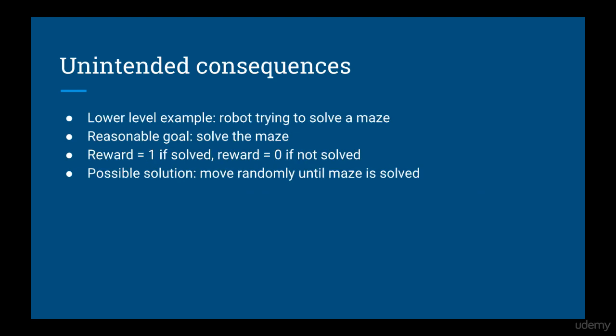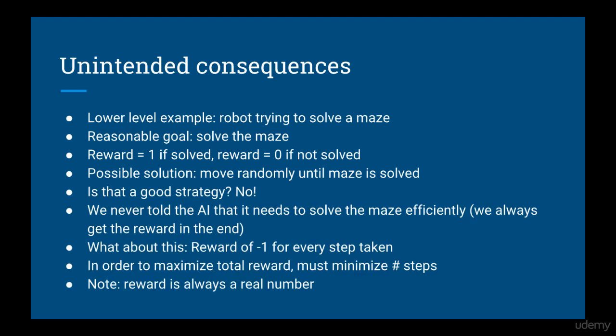To give a more low-level example of how and why rewards should be programmed intelligently, think of a robot trying to solve a maze. A reasonable goal might be to simply solve the maze — if you solve it, you get a reward of 1, otherwise you get a reward of 0. With this reward structure, it's possible for a robot to just implement a random strategy and eventually solve the maze, because we never told the robot it should try to solve it efficiently. Now imagine that we give a reward of minus 1 for every step the AI takes in the maze. Now the AI has incentive to solve the maze using the least number of steps, so it will tend to find a more efficient solution.